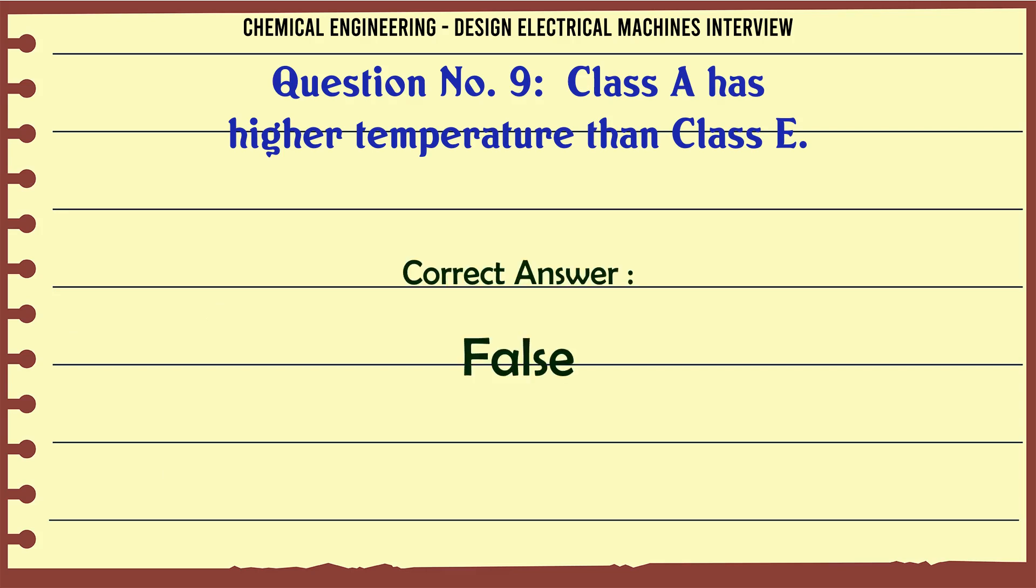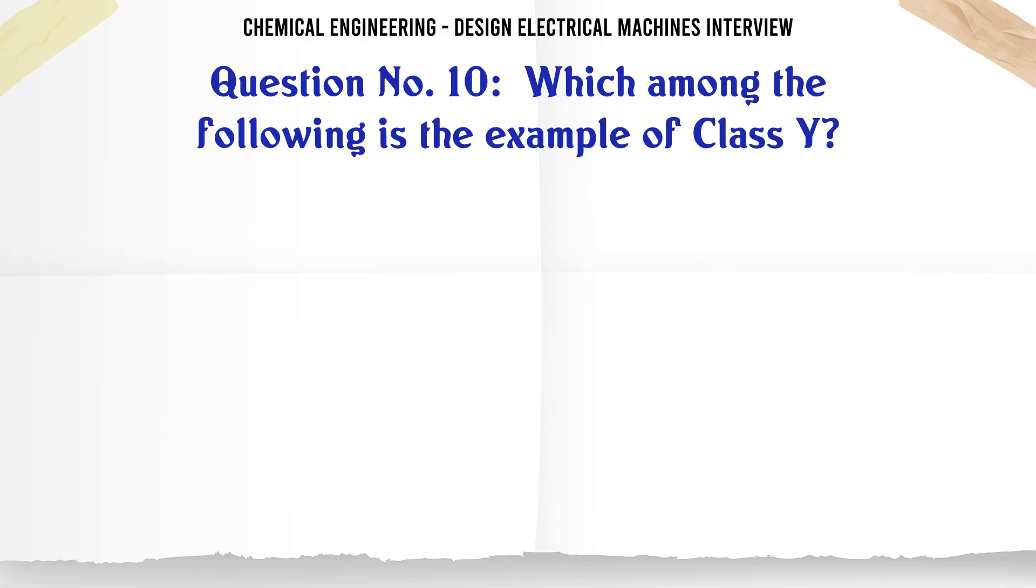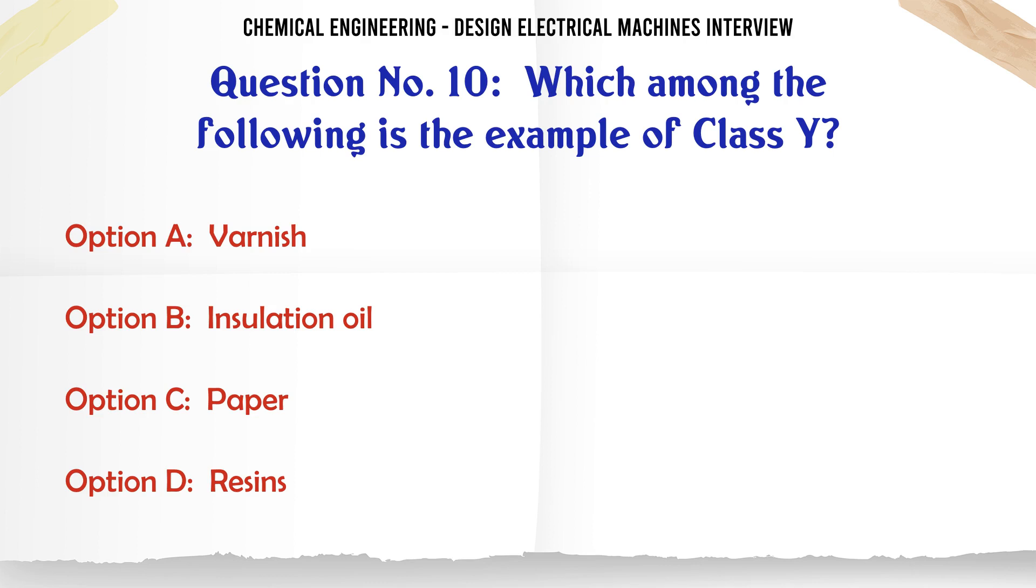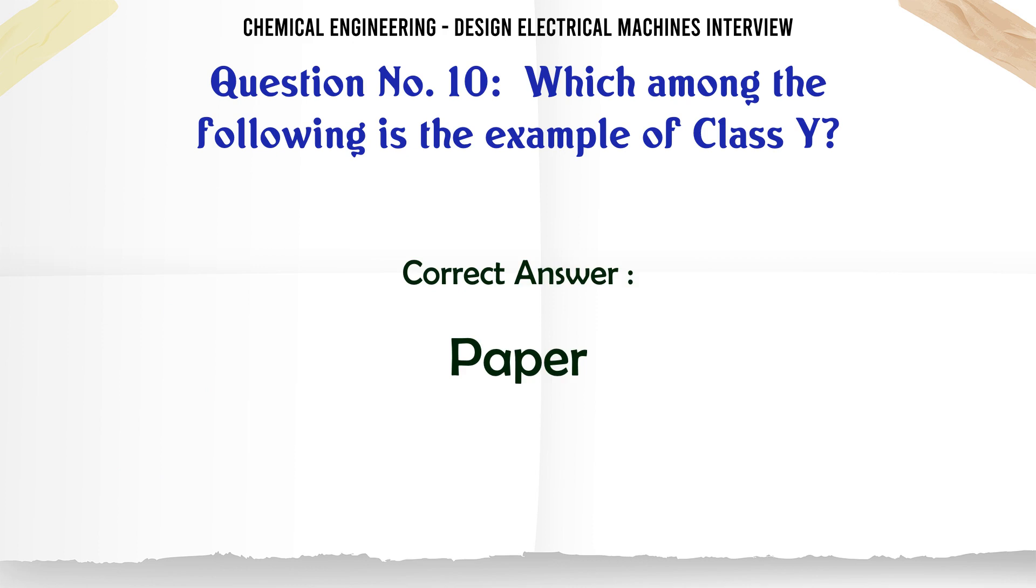Which among the following is the example of class Y? A: varnish, B: insulation oil, C: paper, D: resins. The correct answer is paper.